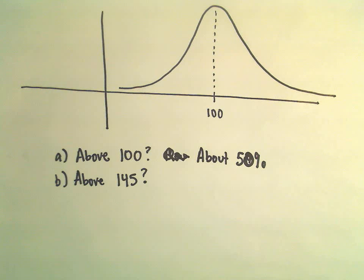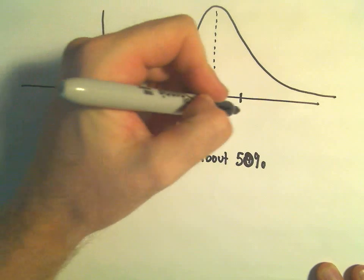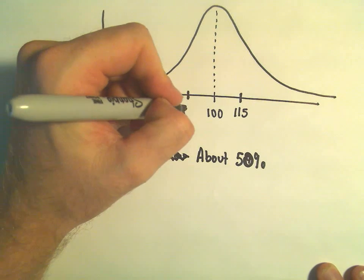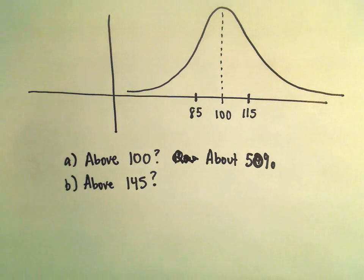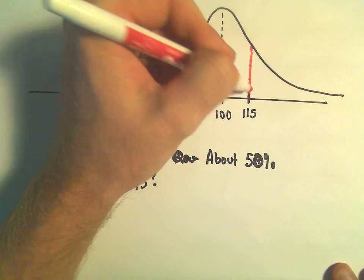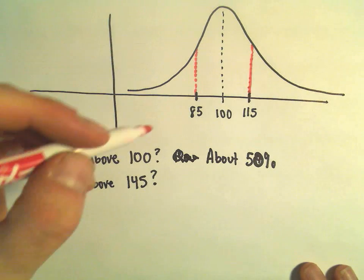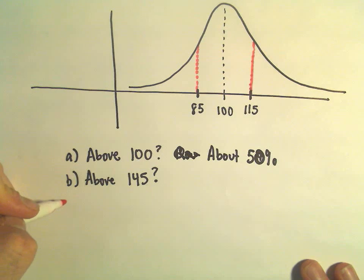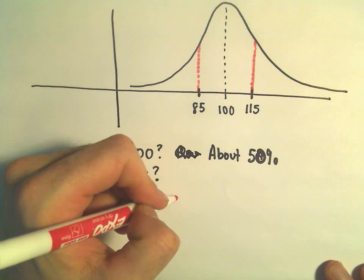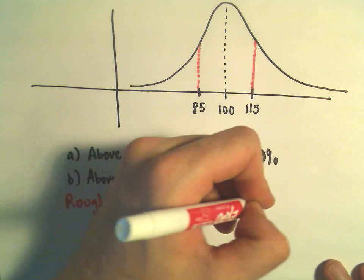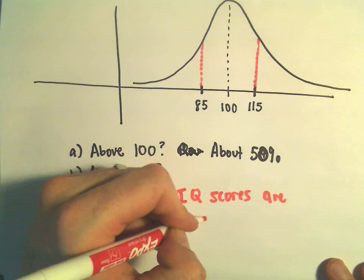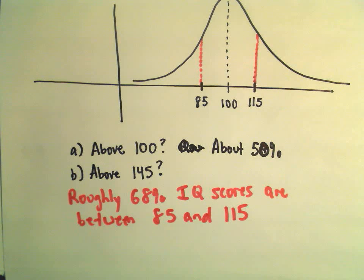Our standard deviation is 15, so I'm going to add 15 to 100, giving me 115, and subtract 15 from 100, giving me 85. We're now one standard deviation away from the mean. We could conclude that approximately 68% of the IQ scores are between 85 and 115.